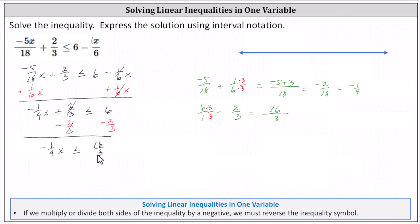And now we might be thinking we should divide both sides by -1/9. But instead of dividing by -1/9, we will multiply by the reciprocal of -9/1. And because we're multiplying by a negative, we also need to reverse the inequality symbol.